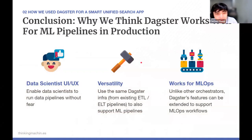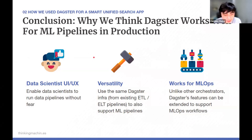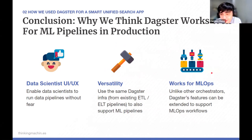In conclusion, why Dagster works for ML pipelines in production: first, data scientists get a user-friendly UI that enables them to run, monitor, and debug data pipelines without fear. Second, Dagster is versatile — we already have Dagster infrastructure supporting ETL and ELT pipelines and can easily extend it to support ML pipelines, removing the overhead of setting up something completely new. Third, Dagster uniquely supports ML ops: unlike other orchestrators, it has features like asset materialization for tracking ML metadata, and its pipelines are Pythonic and data-aware, making it easy to port from Jupyter notebooks.